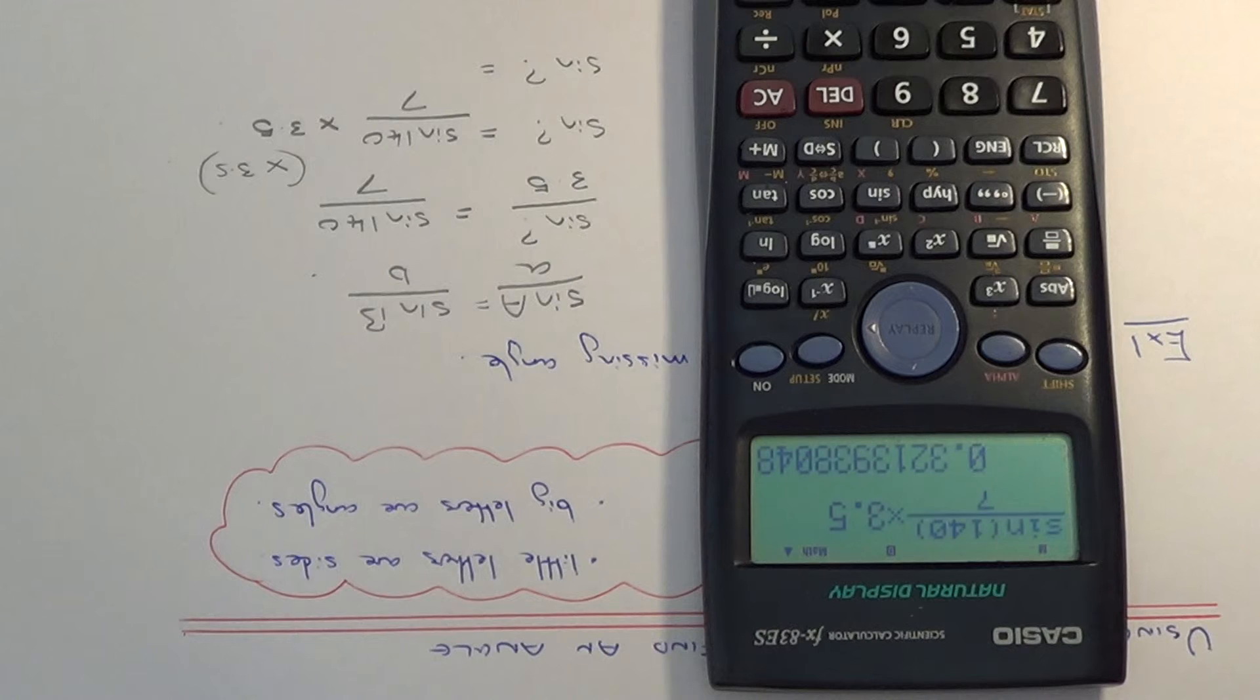If we hit equals that gives us a decimal of 0.3213938048. Now all we've got to do now is do the opposite to sin. And the opposite to sin is sin inverse, so we just need to sin inverse this decimal here.